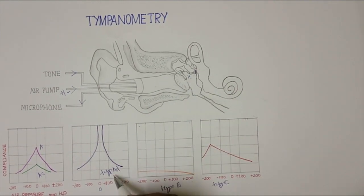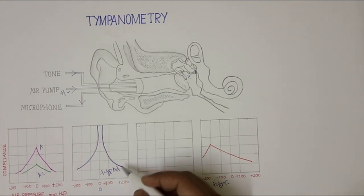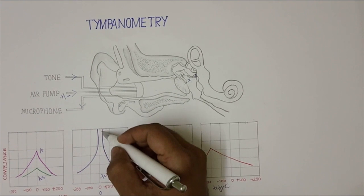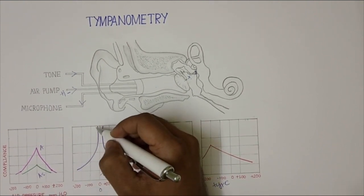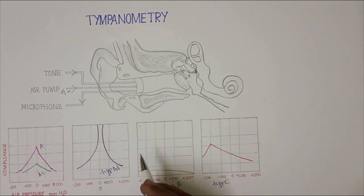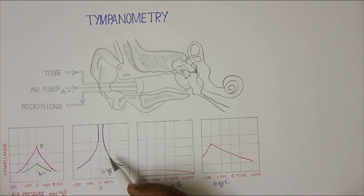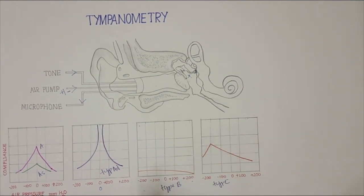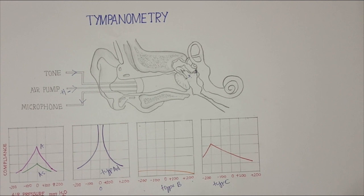In the Type AD curve, the compliance is maximum at both positive and negative pressure. That means the tympanic membrane is flaccid — whether you give negative or positive pressure, it vibrates to its maximum extent because it is disconnected from the ossicles. This indicates ossicular discontinuity.